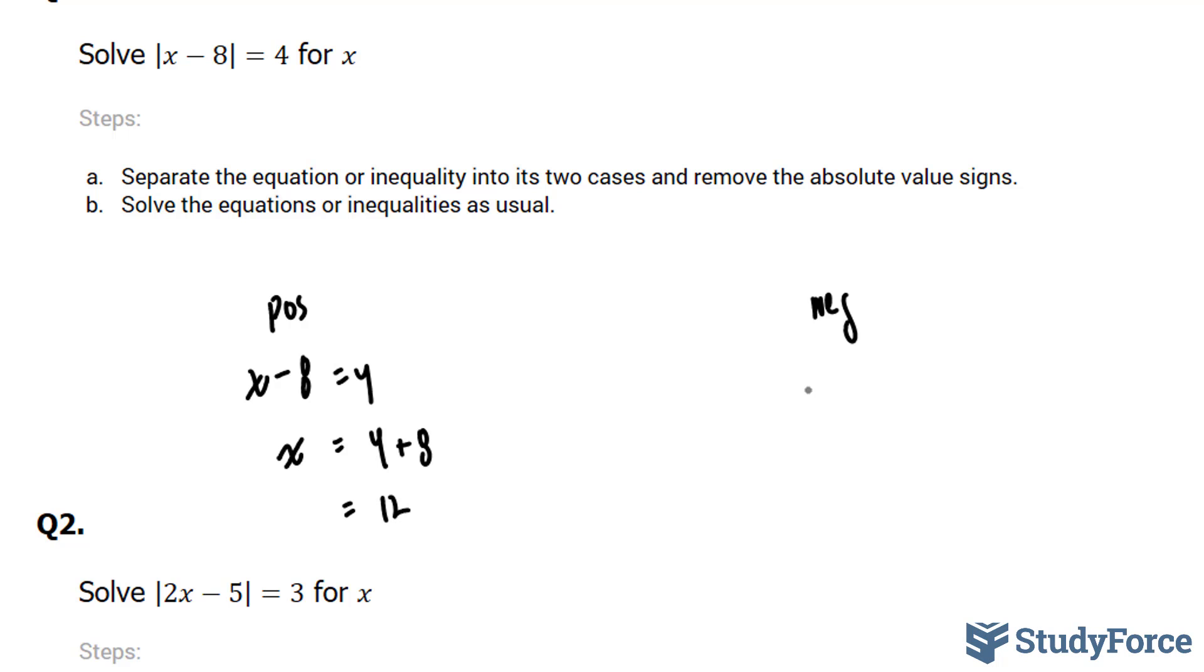In the negative case, x minus 8 is equal to negative 4. If we solve for x here, we end up with negative 4 plus 8, and this gives us a value of x is equal to 4.